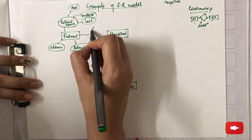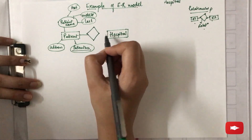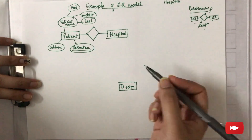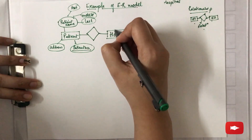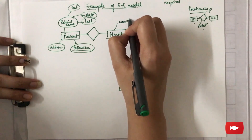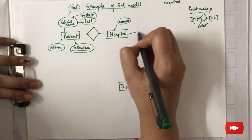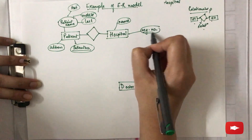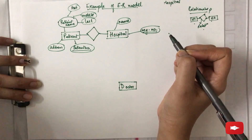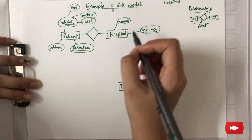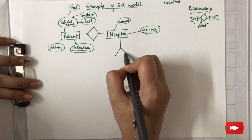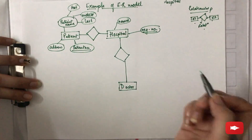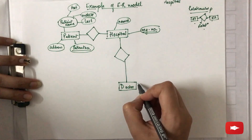This patient entity is in a relationship with the hospital, so these two are attached using a diamond box. Moving to the hospital entity, it can have a name and a registration number, which can also act as a primary key. Hospital is also in a relationship with doctor, so again they are attached with a diamond box.